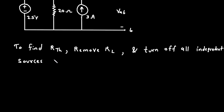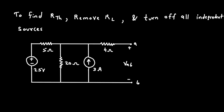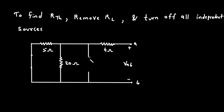So when we turn off independent sources: when we turn off a voltage source, that time we have to replace it by its short circuit. And when we turn off an independent current source, that time we have to replace it by open circuit. Now here this will be our Thevenin's resistance RTH.